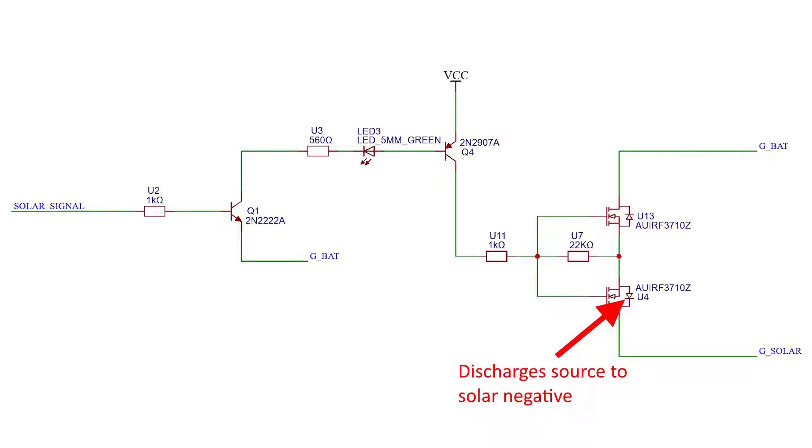The bottom body diode ensures the source is at the same level as the panel's negative. With this setup we are always sure the MOSFETs are completely closed. When the MOSFET is on, the panel's negative is equal to the battery's negative. The gate is charged at the same voltage as the battery.